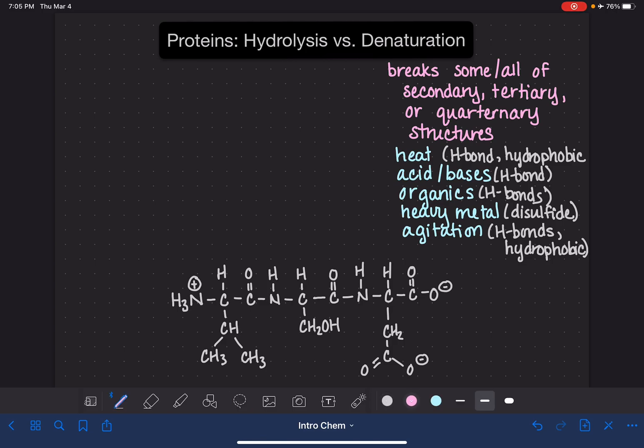Now, the hydrolysis process is something that acts on the primary structure of a protein. And the hydrolysis, the peptide bonds or the amide bonds, are broken in the primary structure.